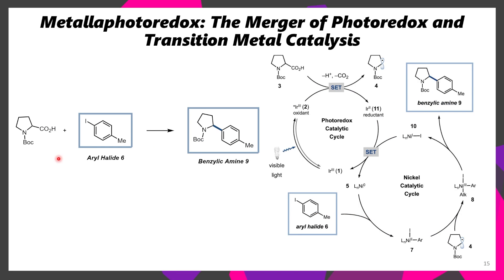A good example of this is N-Boc proline, where it's possible to form a pyrrolidine-substituted arene. First, this iridium photocatalyst is excited through the use of light. This excited photocatalyst is able to decarboxylate N-Boc proline to the corresponding alkyl radical, reducing the iridium(III) to its iridium(II) reducing state. This iridium(II) reductant then reduces nickel(I) to nickel(0), regenerating the iridium photocatalyst. This nickel(0) species undergoes oxidative addition with the aryl halide, and once we form the nickel(II) complex, the pyrrolidine radical adds to form a nickel(III) species, which undergoes reductive elimination to form the product.